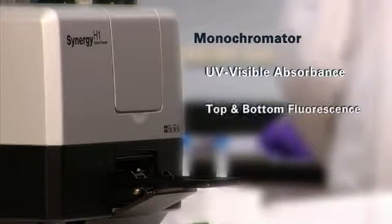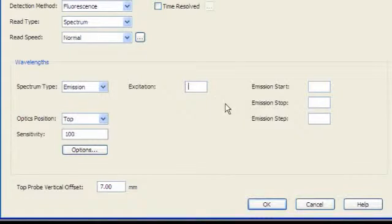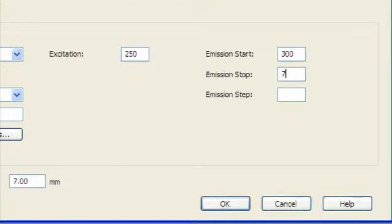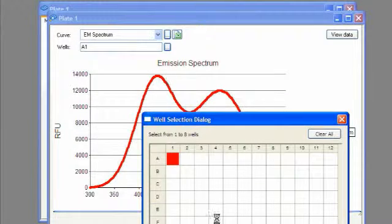The monochrometer-based module supports UV visible absorbance, top and bottom fluorescence, and luminescence. Any wavelength from the low UV to the near infrared can be selected through the software, making this system extremely flexible and easy to use for a wide range of assays. Unknown samples can be scanned to establish excitation or emission maxima.